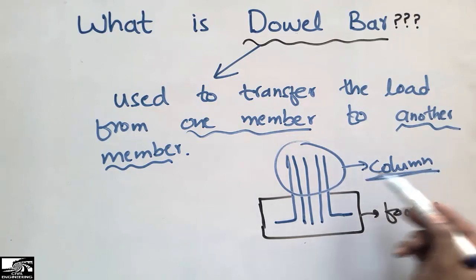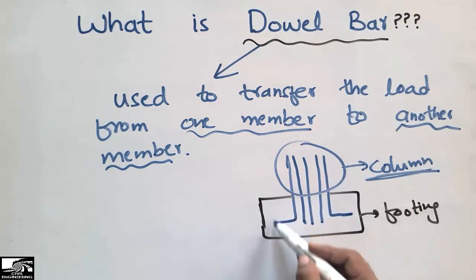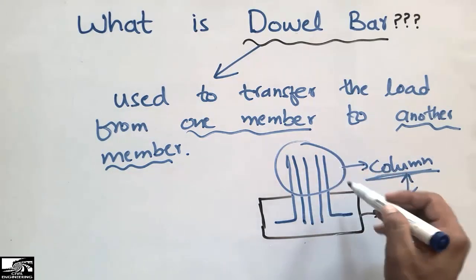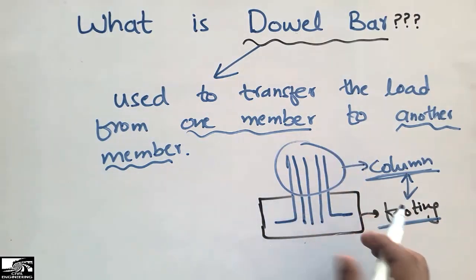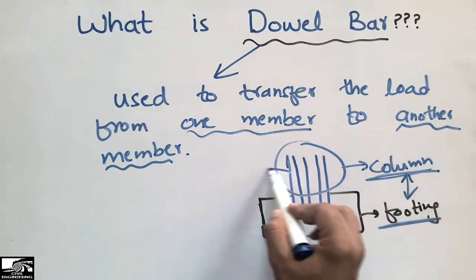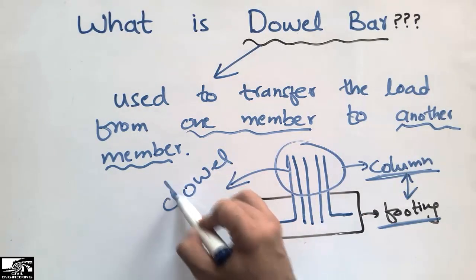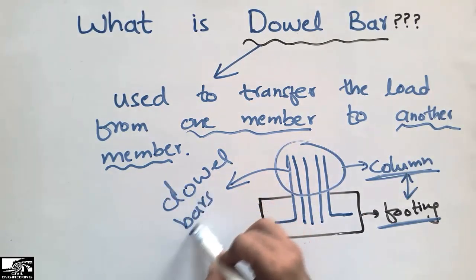The column is the first member and it transfers the load to this steel bar, and the other member is the footing. So two members are used in this case to which the load is transferred. That's why these reinforcements are known as the dowel reinforcement or the dowel bars.